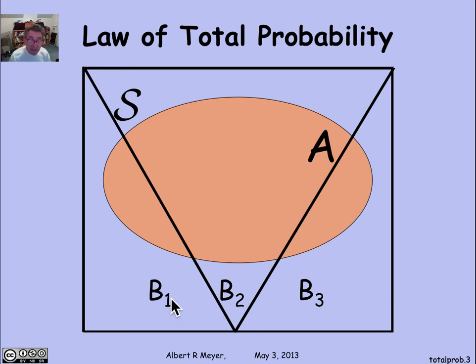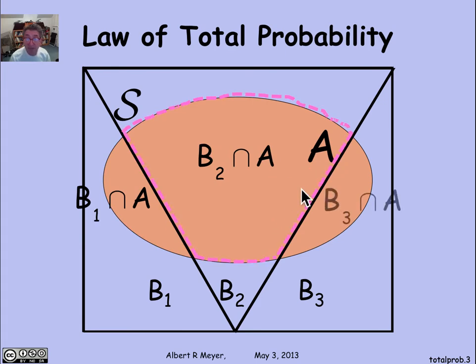Now, of course, these three sets that cut up the whole space willy-nilly cut up the set A into three pieces. The first piece is the points in A that are in B₁. The second piece is the points in A that are in B₂. And the third is the points in A that are in B₃.